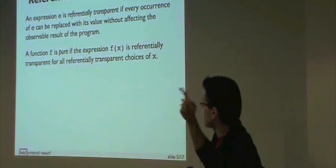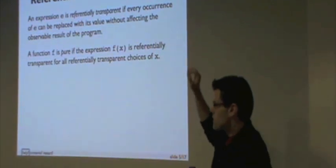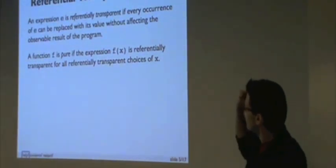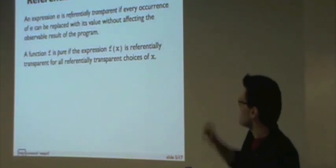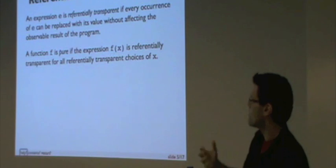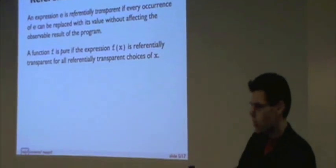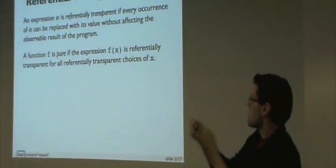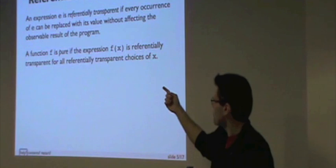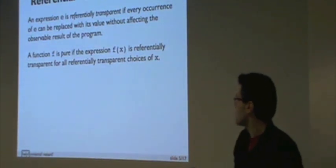So we can wave our hands and say a pure function doesn't have side effects - but what does it mean precisely? Referential transparency is the central notion of functional programming. An expression E is referentially transparent if, and only if, every occurrence of E can be replaced with its value in the program without affecting the result. Computation proceeds by substituting equals for equals. A function f is pure if the expression f(x) is referentially transparent for all referentially transparent x.